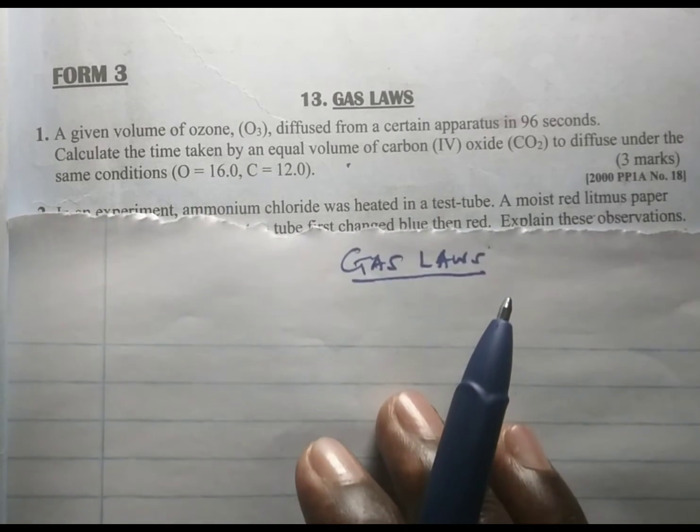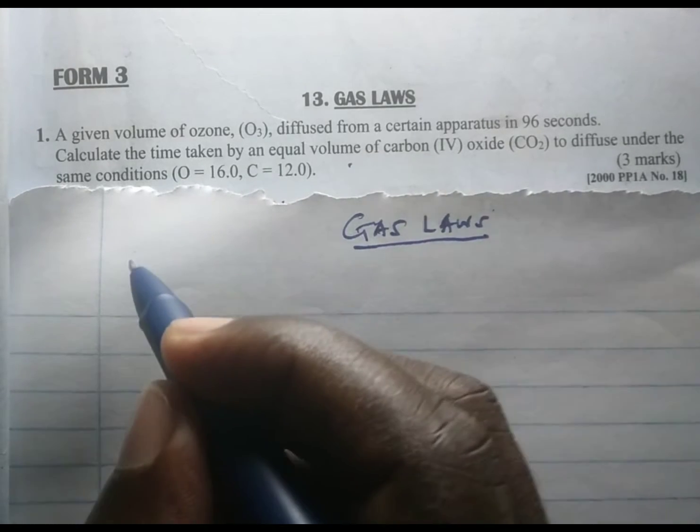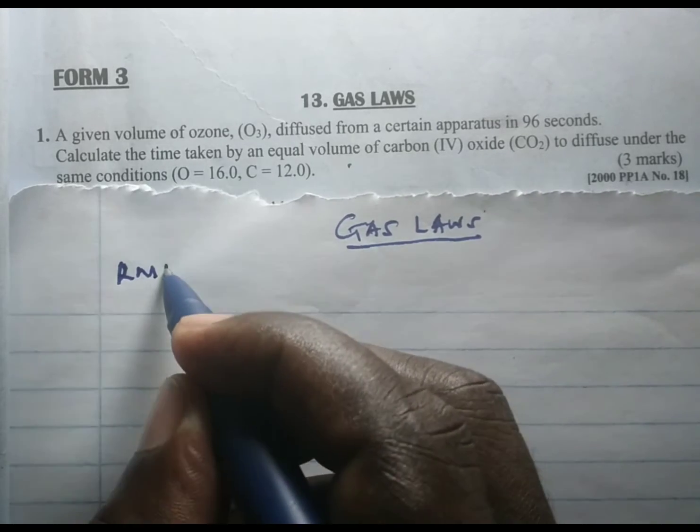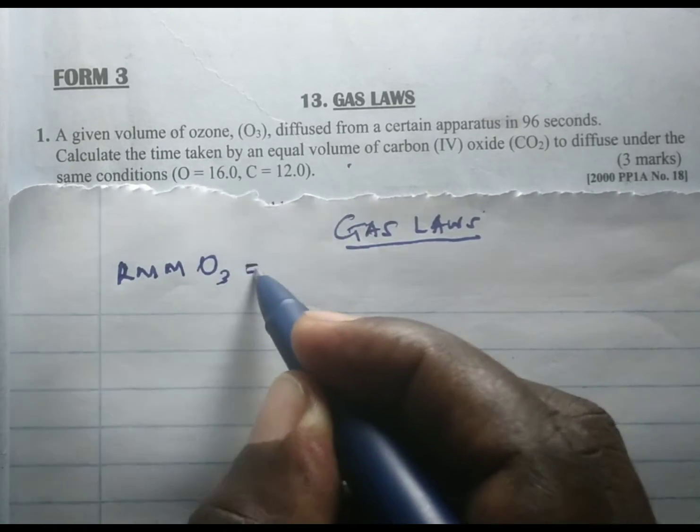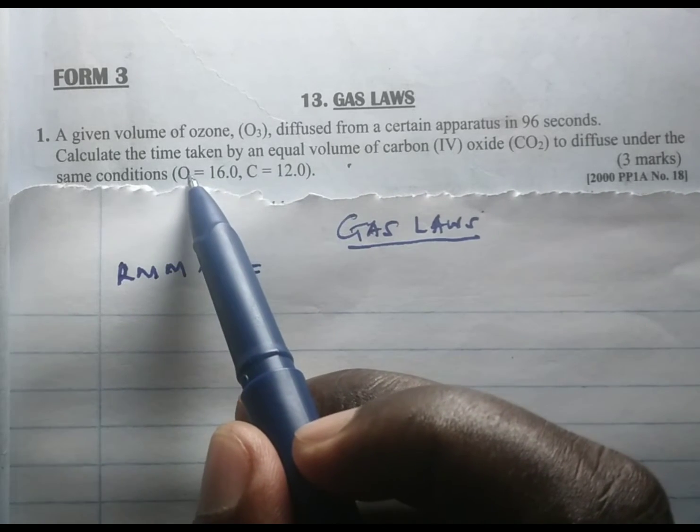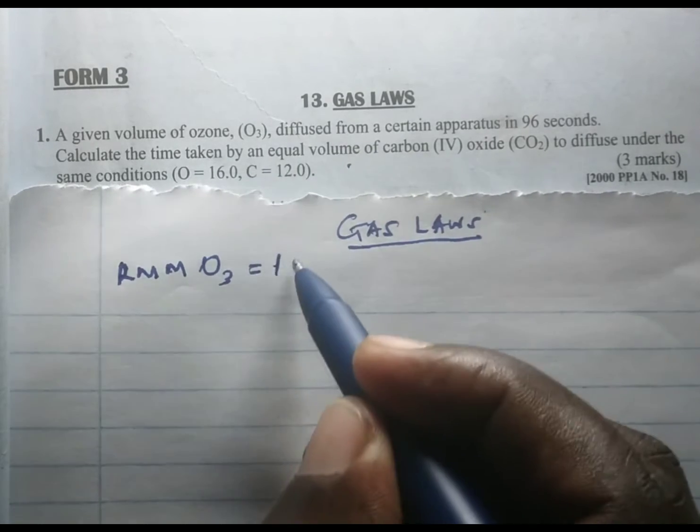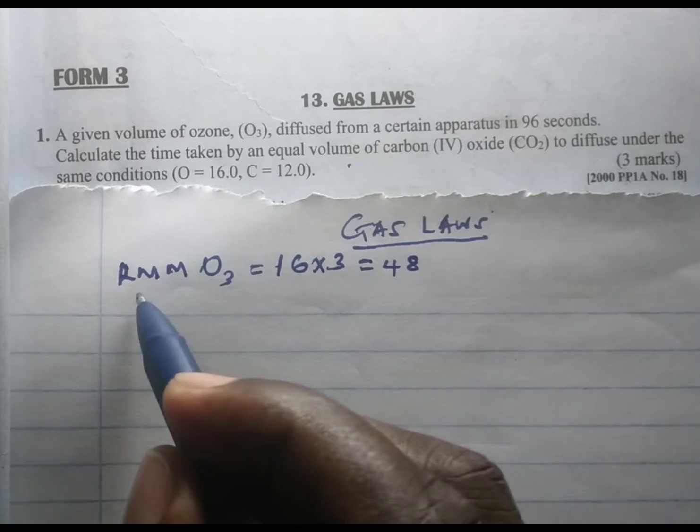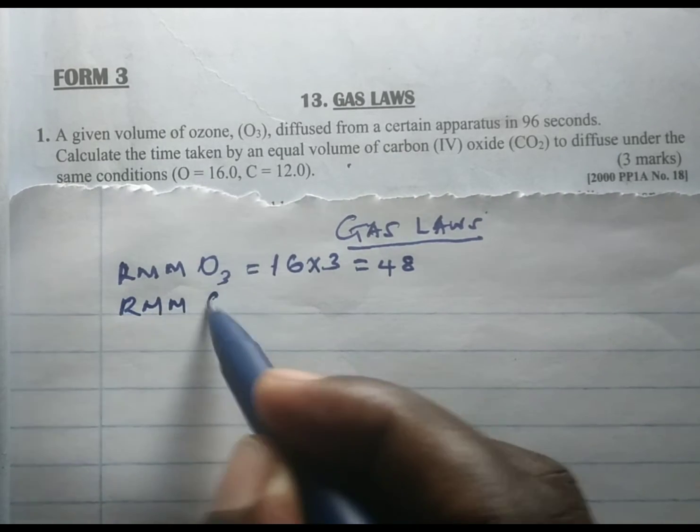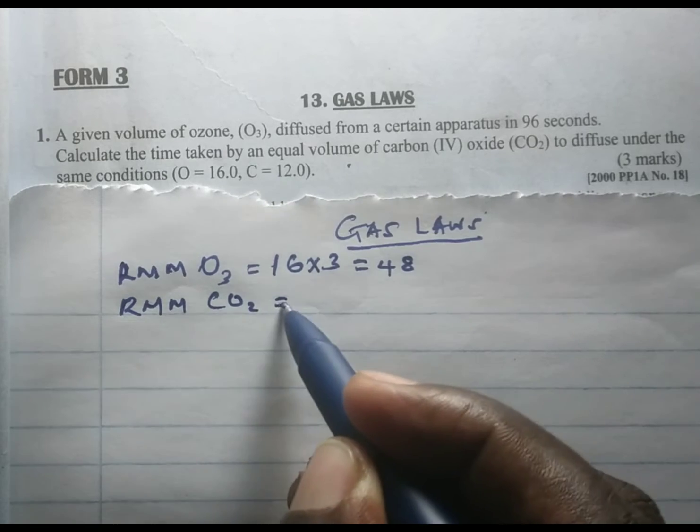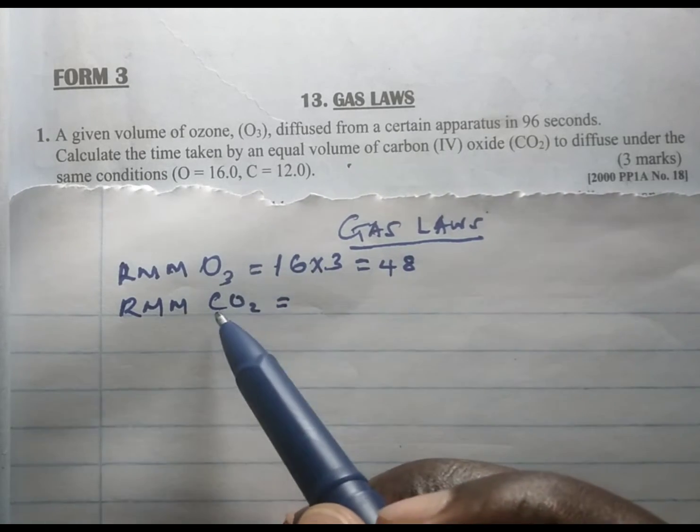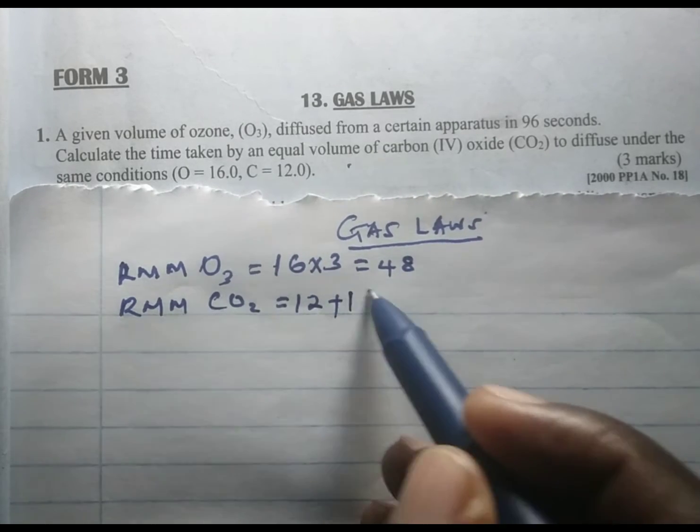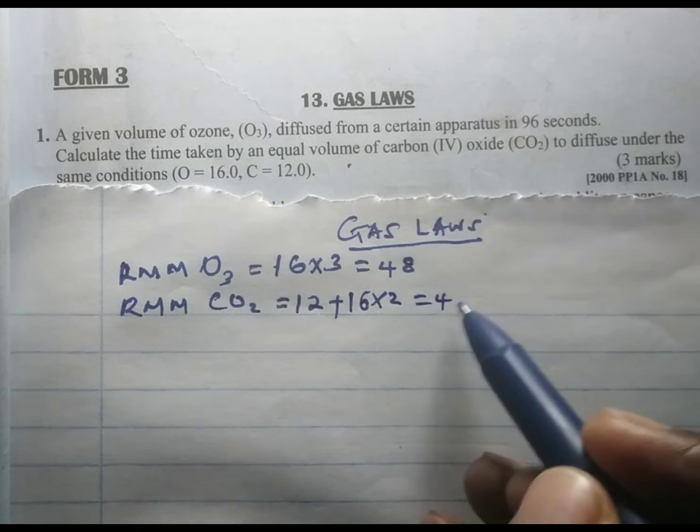So we are going to approach the question by first getting the relative molecular mass of ozone, and you realize the relative atomic mass of oxygen is 16, plus ozone has three of them, giving us 48. Then we have the relative molecular mass of carbon dioxide which is going to be equal to carbon has a relative atomic mass of 12 plus oxygen has 16, but we have two of them giving us 44.